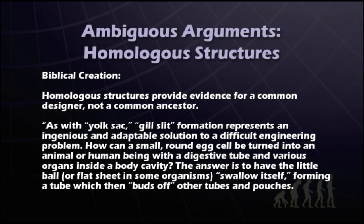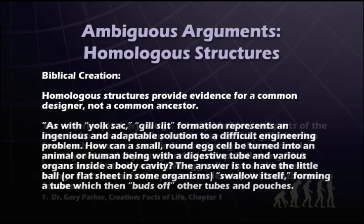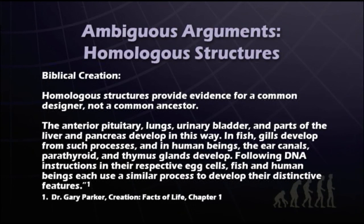Here's a quote from Dr. Gary Parker: 'As with yolk sac, gill slit formation represents an ingenious and adaptable solution to a difficult engineering problem. How can a small, round egg cell be turned into an animal or human being with a digestive tube and various organs inside a body cavity? The answer is to have the little ball or flat sheet swallow itself, forming a tube which then buds off other tubes and pouches. The anterior pituitary, lungs, urinary bladder, and parts of the liver and pancreas develop in this way. In fish, gills develop from such processes. In human beings, the ear canals, parathyroid, and thymus glands develop. Following DNA instructions in their respective egg cells, fish and human beings each use a similar process to develop their distinctive features.'